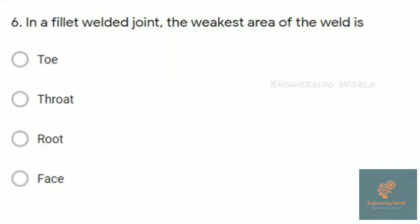Next question: In a fillet welded joint, the weakest area of the weld is... I am drawing the figure. Here is the weld, and there is a line at 45 degrees to the horizontal. This line represents the weakest area, which is known as the throat.